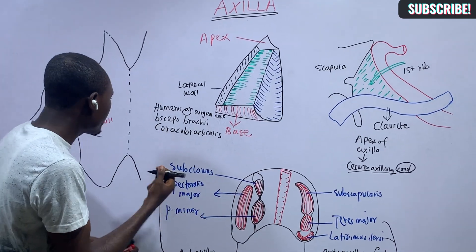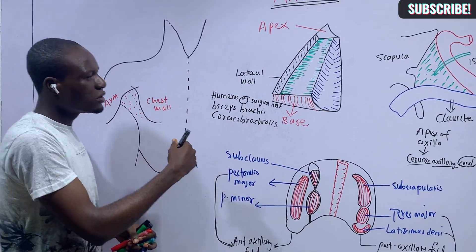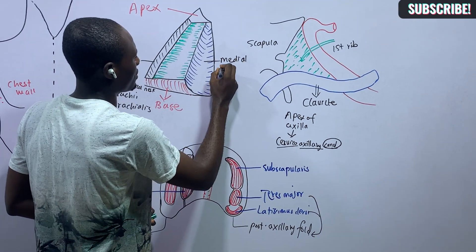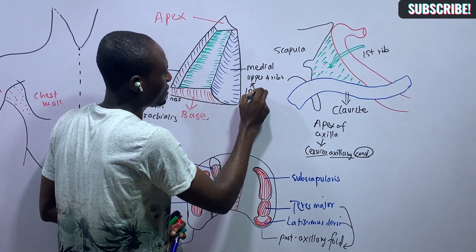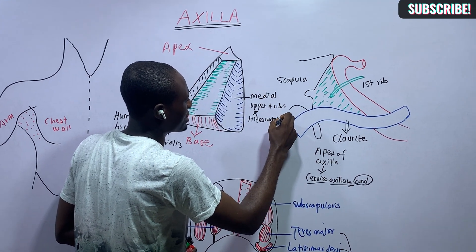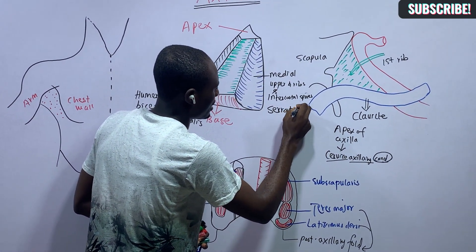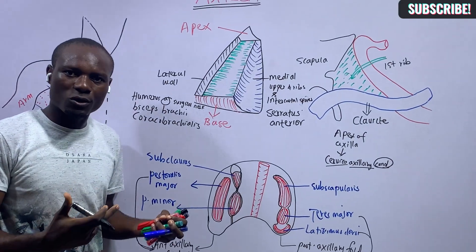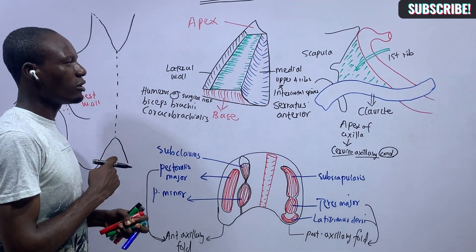The medial wall of the axilla is formed by the region close to the chest wall. Specifically, it is formed by the upper four ribs and their intercostal spaces, together with the serratus anterior muscle. Some of the digitations of the serratus anterior form the medial wall of the axilla.